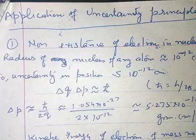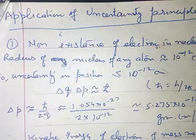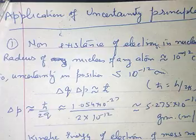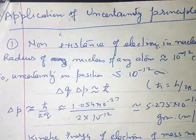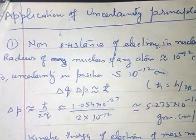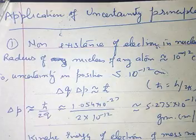Now value of h cross is 1.054 into 10 raised to the power minus 27 and delta q which is 2r. So it is equal to twice into 10 raised to the power minus 12. So in solving this equation, we will get the value as 5.275 into 10 raised to the power minus 16 gram centimeter by second.